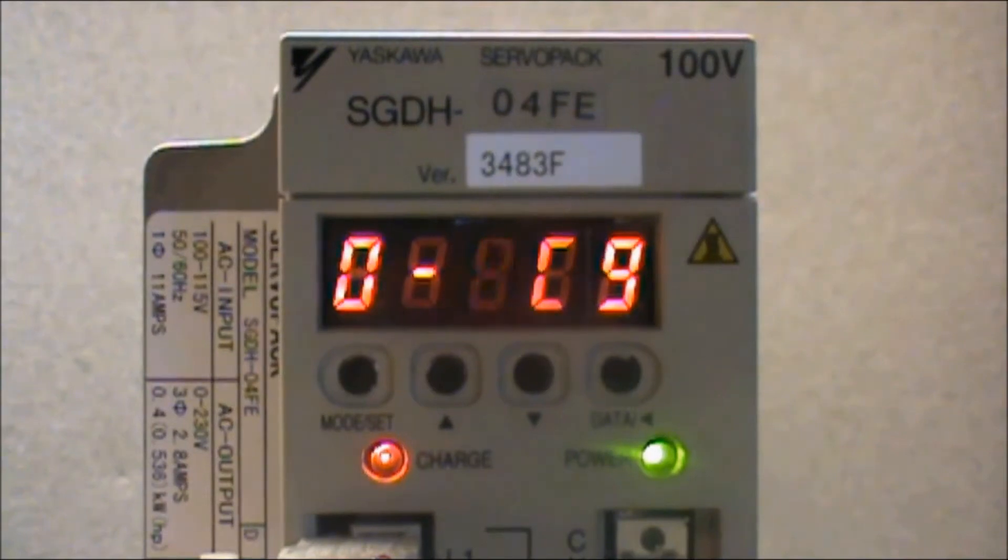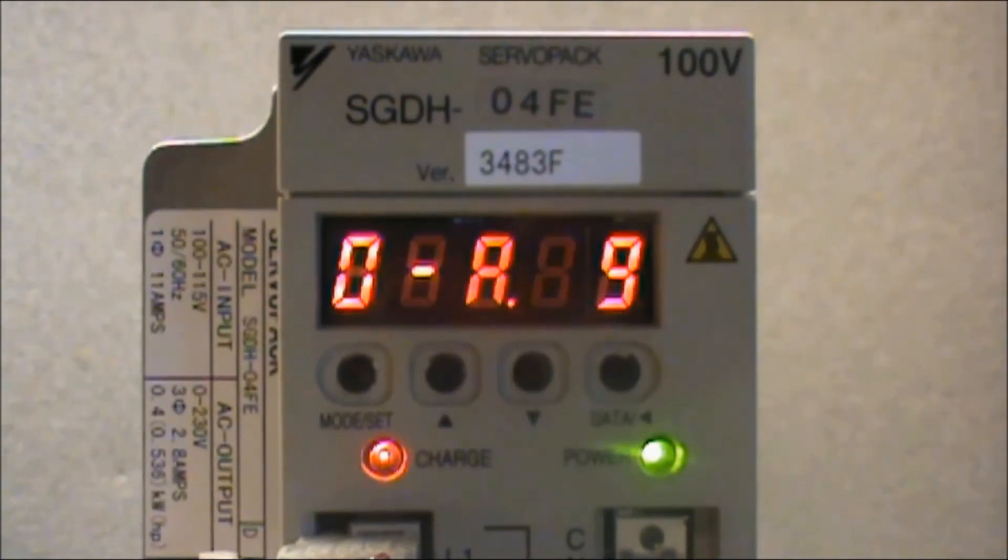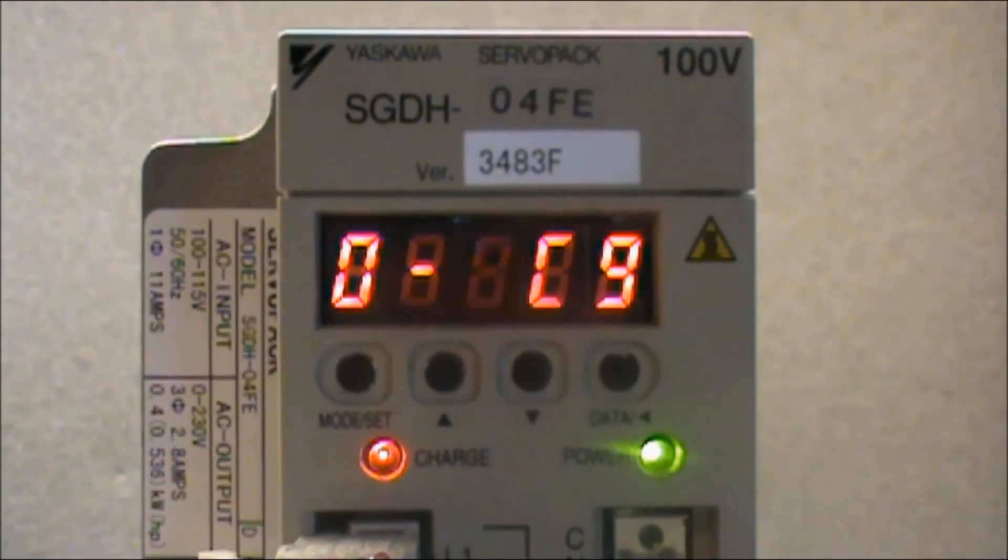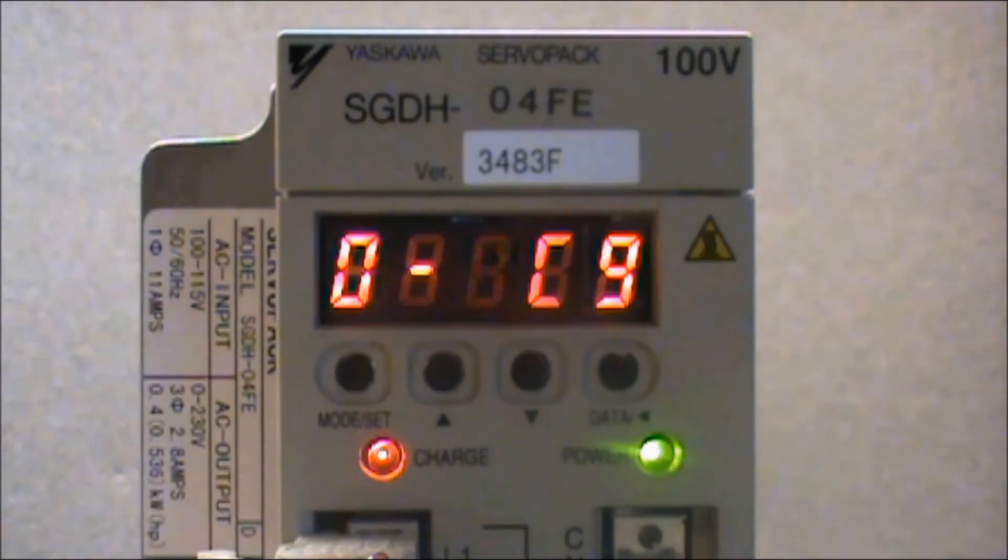With the alarm history displayed, use the up or down arrow buttons to scroll through the alarms. The controller will store up to ten of the most recent alarms.